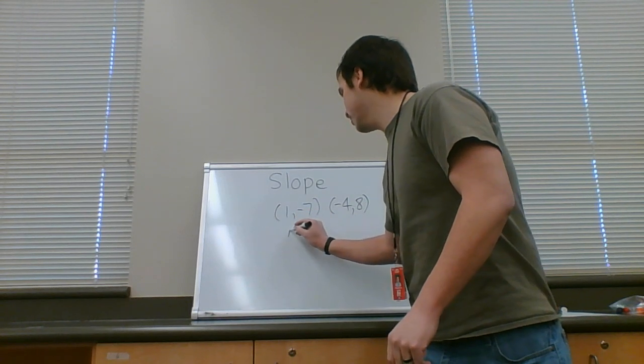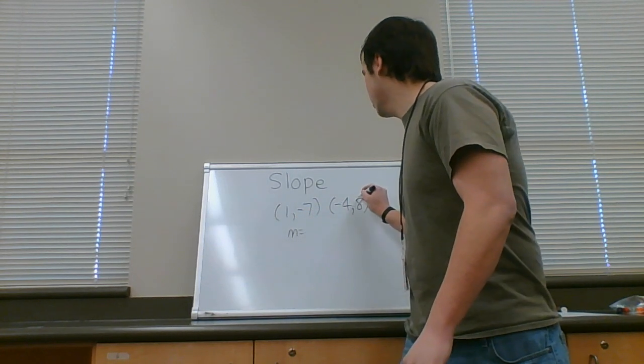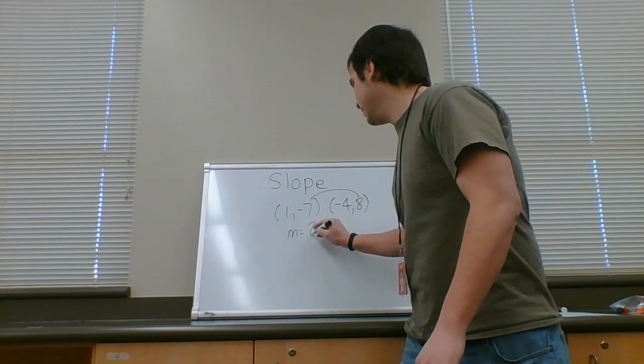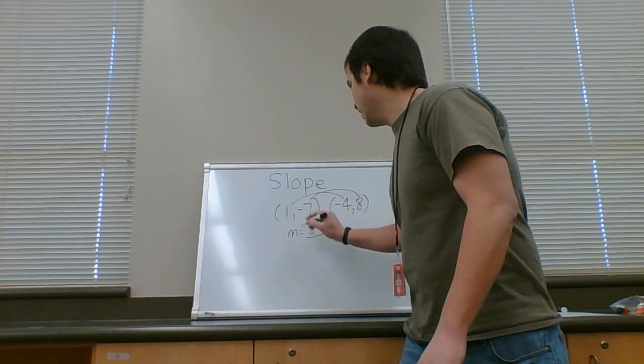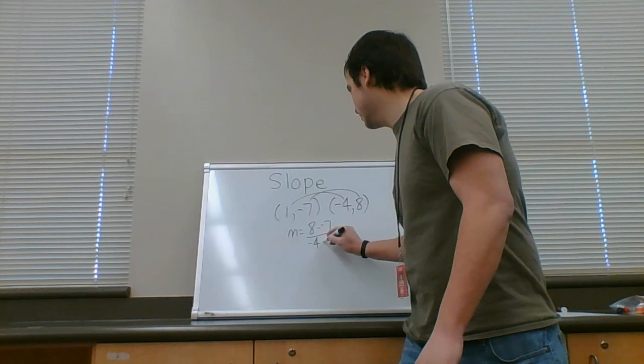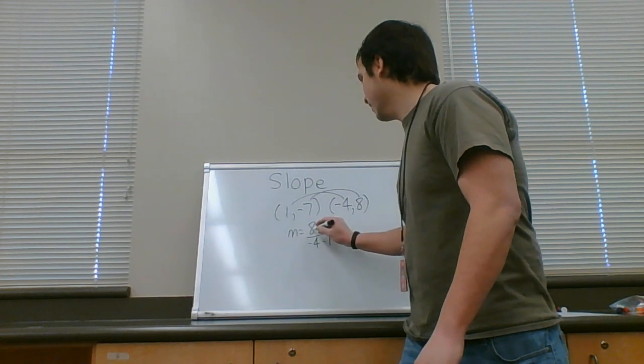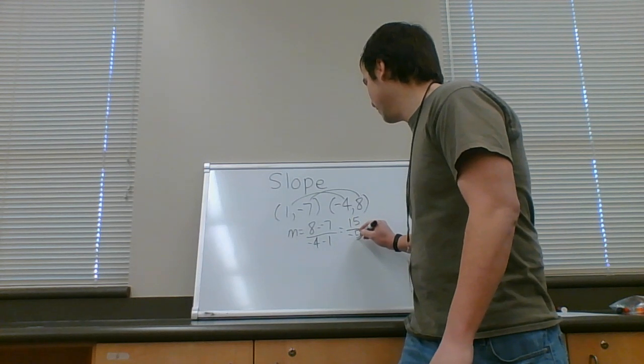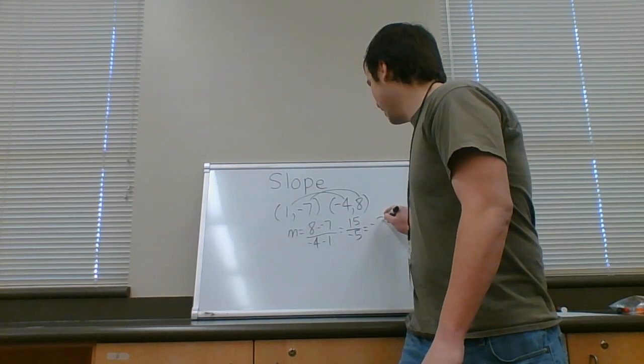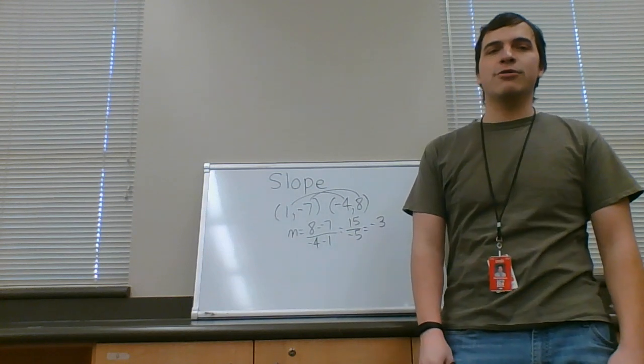So, our slope is equal to eight minus negative seven over negative four minus one. That gives eight minus negative seven is fifteen. Negative four minus one is negative five. That simplifies to negative three. The slope is negative three.